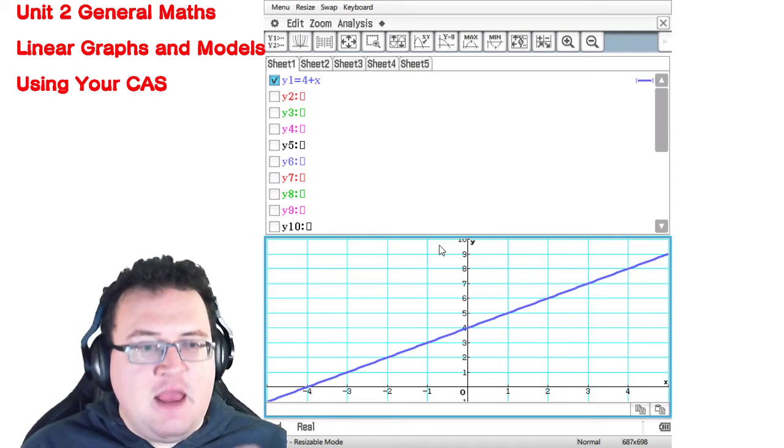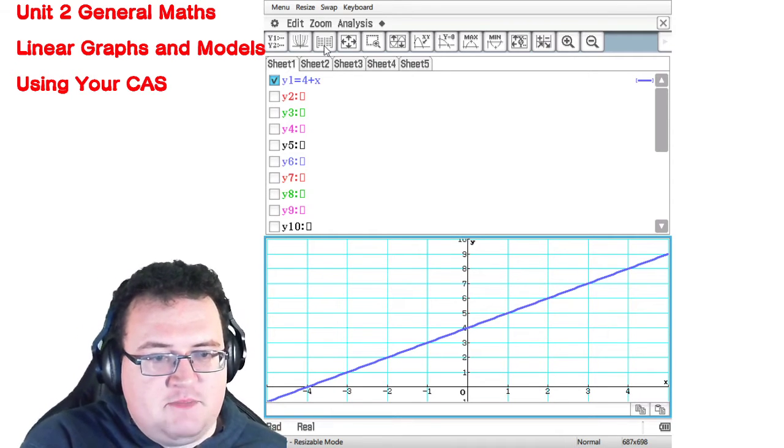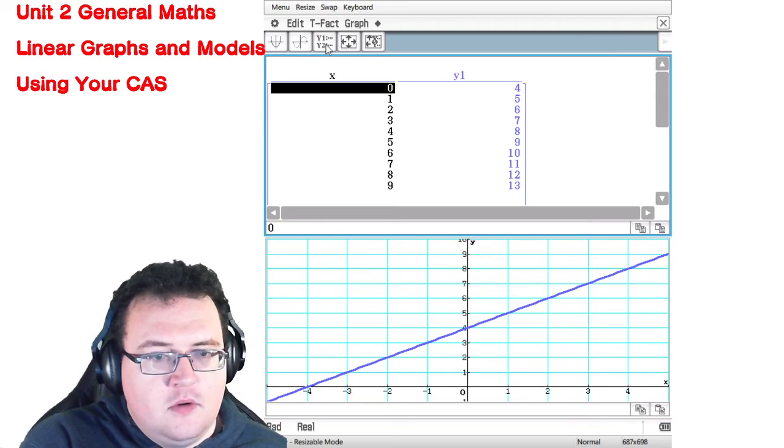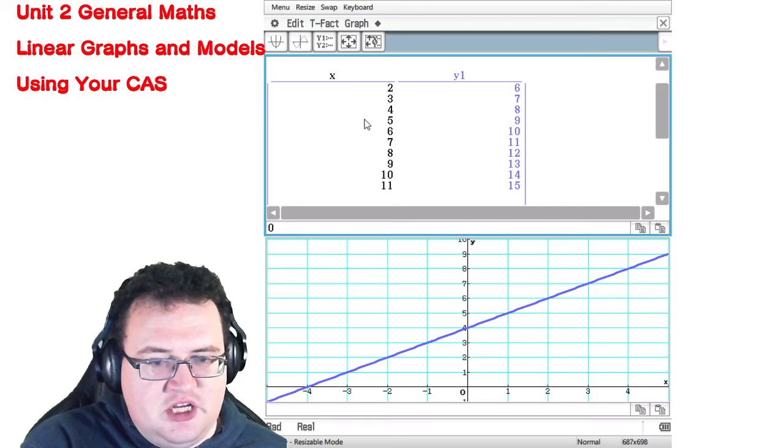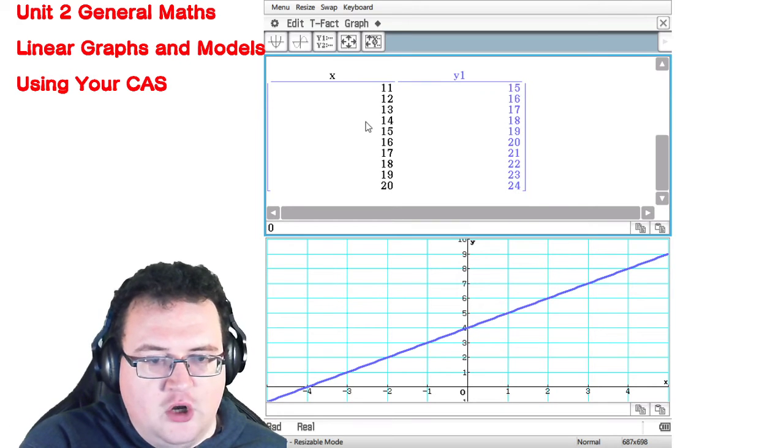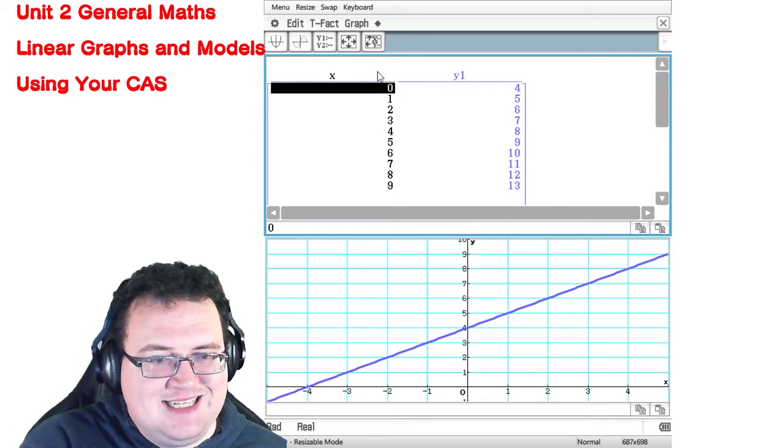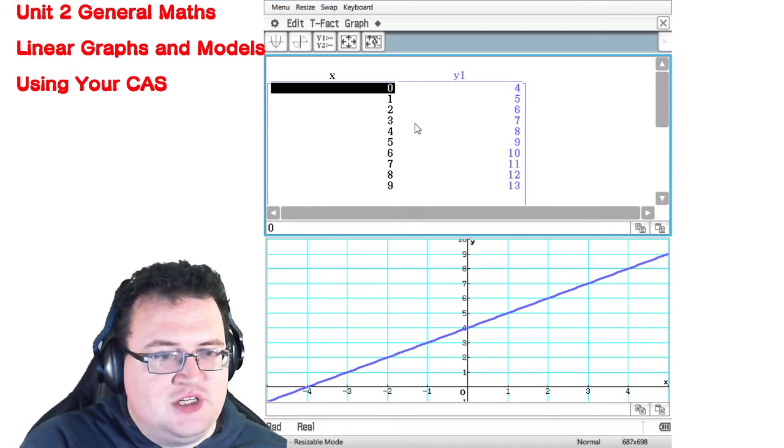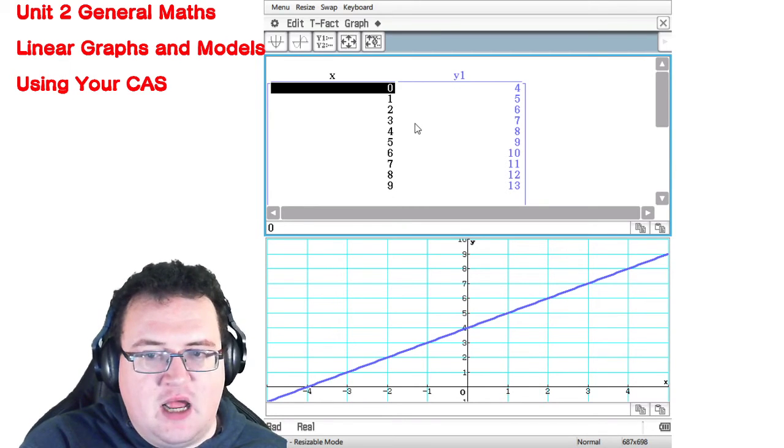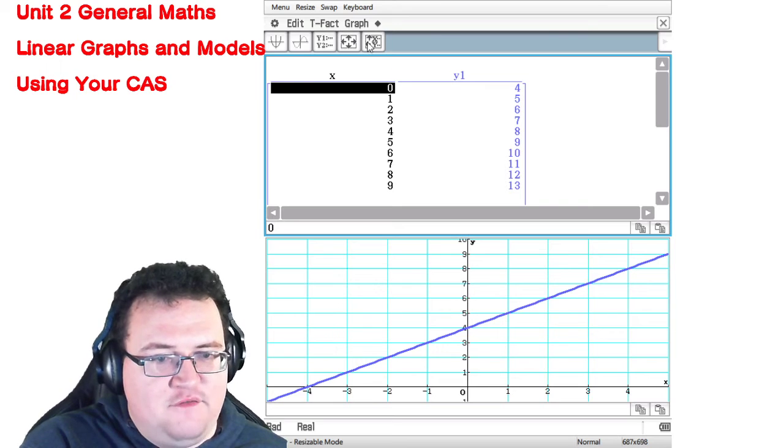To get the table of values, we press this button here. And what it does here is it spits out a series of values that goes on forever depending on how your CAS is set up. However, we are only interested in x values that are between minus 5 and 5.